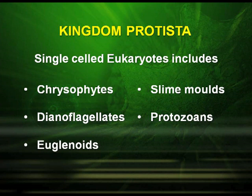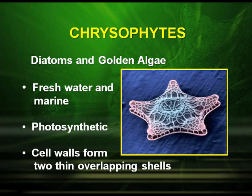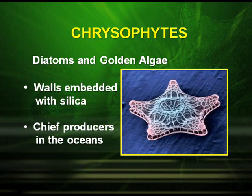Kingdom Protista. They are single-celled eukaryotes which include chrysophytes, dinoflagellates, euglenoids, slime molds, and protozoa. Chrysophytes are the diatoms and golden algae. They are found in fresh water and marine environments. They are photosynthetic. Their cell wall forms two thin overlapping shells, and their walls are embedded with silica. They are the chief producers in the oceans.